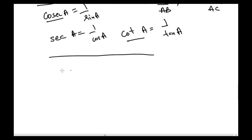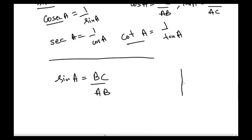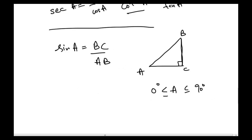Let's clarify further with an example. Drawing a right-angle triangle with the right angle at C, and vertices labeled A, B, and C — with angle A as an acute angle between 0° and 90° — sine A is defined as the ratio BC to AB at angle A.